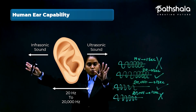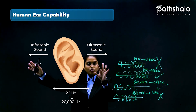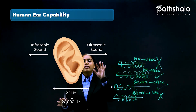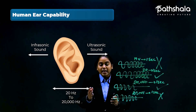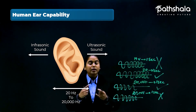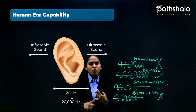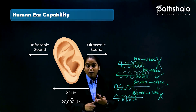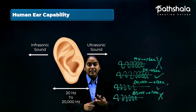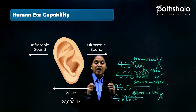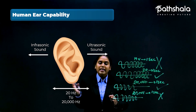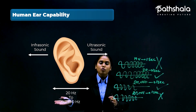Fortunately, we cannot hear these two values. If we could hear them, we would be able to hear the sound of a mouse, the sound of an elephant, the sound of dolphins, and many other things — and we wouldn't even be able to sleep at night quietly. So we are very fortunate that we can only hear within this range.